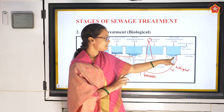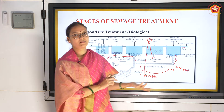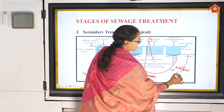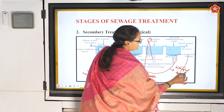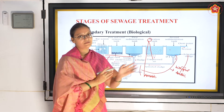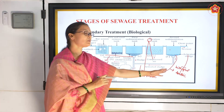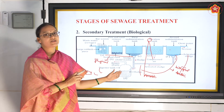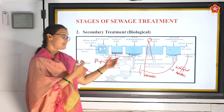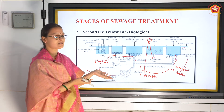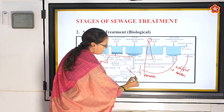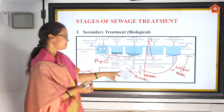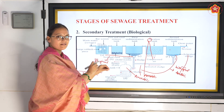Whatever sediments in the second sedimentation tank are the flocs of bacteria - this activated sludge is nothing but the aerobic bacteria. The flocs or colonies of aerobic bacteria form the activated sludge. This activated sludge is taken into the digester tank, and to eat up these aerobic bacteria, anaerobic bacteria are added.